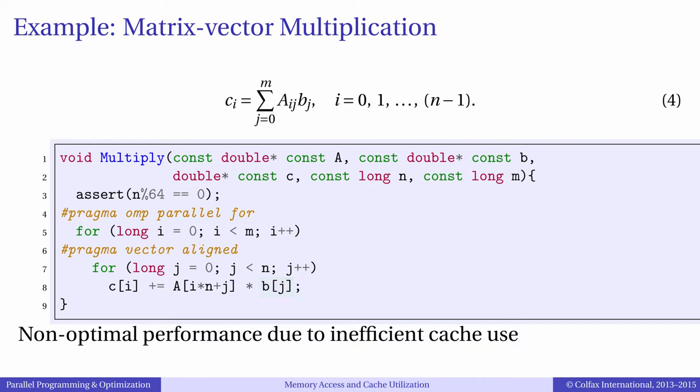Then memory traffic in b will be insignificant compared to reading the matrix A. But in a poorer solution vector b will be read from memory m times which may double the calculation time compared to the optimal solution.